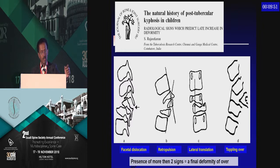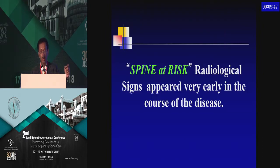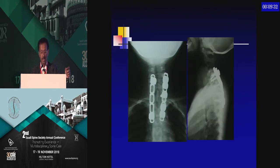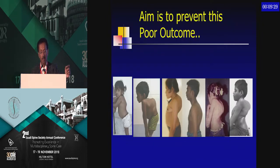Even in cured disease, if you find these signs appearing, it means that surgical fusion is actually needed at that point. Here is a good case where all signs are positive. The child is cured and running well, but we have to convince the parents to proceed with surgery; otherwise, this child will come up with a big problem later. That is the prevention strategy.